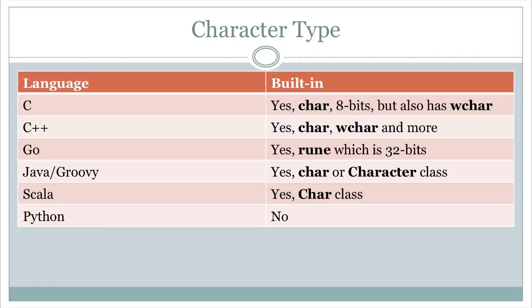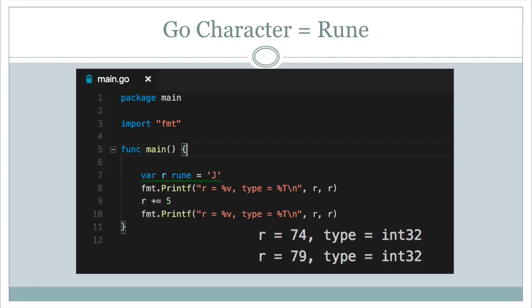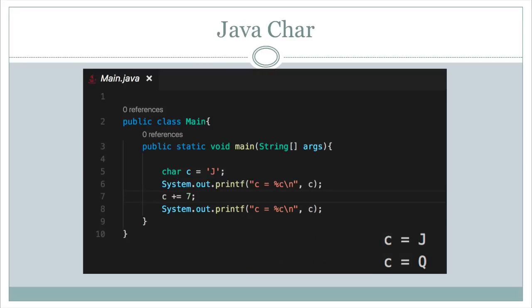Go doesn't call it a character, which is a thing that you can put on the screen or an individual element of a string. Go calls this a rune. And in Go, a rune is 32-bit. For all these languages, and of course Java also, you have a character. In Java, the JVM language character is 16-bits. In all these languages, you can still sort of treat a character as a number, which means that you can add a numeric value to it.